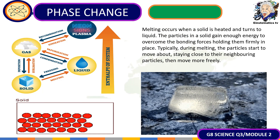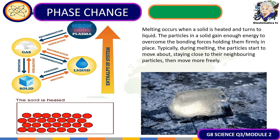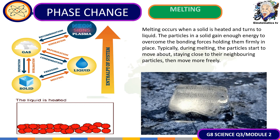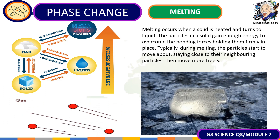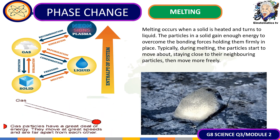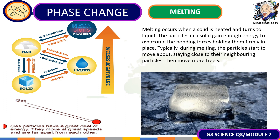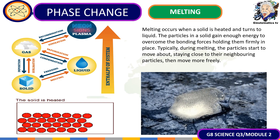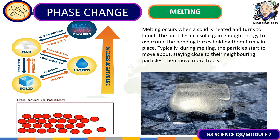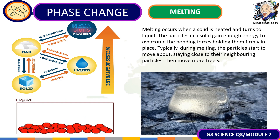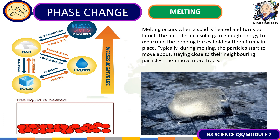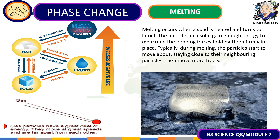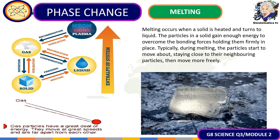Now that we know the particle theory of matter, let's go right into the physical changes that matter undergoes. The first one is melting. Melting occurs when a solid is heated and turns into a liquid. When heated, the particles in a solid gain enough energy to overcome the bonding forces holding them together. As a result, it melts and the particles start to move away from each other, as shown in the picture.